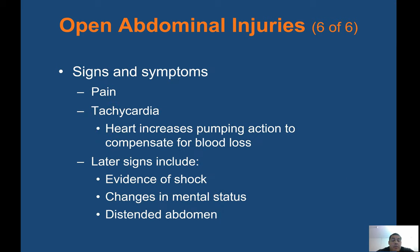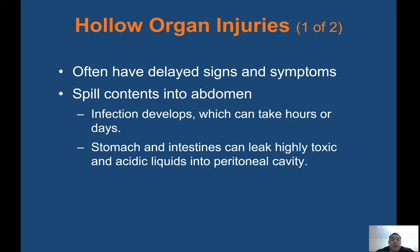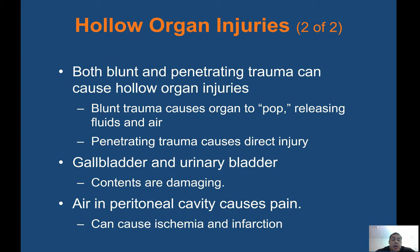Signs and symptoms of abdominal injury include pain, tachycardia as the heart increases pumping action to compensate for blood loss. Later signs include evidence of shock, changes in mental status, and distended abdomen. Hollow organ injuries often have delayed signs and symptoms — they spill contents into the abdomen, and infection develops which can take hours or days. The stomach and intestines can leak highly toxic and acidic liquids into the peritoneal cavity. Both blunt and penetrating trauma can cause hollow organ injuries. Blunt trauma causes the organ to pop, releasing fluids and air; penetrating trauma causes direct injury. Air in the peritoneal cavity causes pain and can lead to ischemia and infarction.